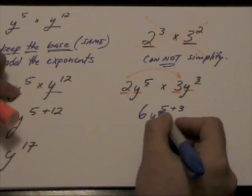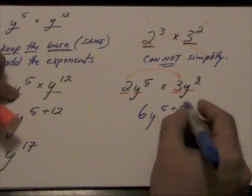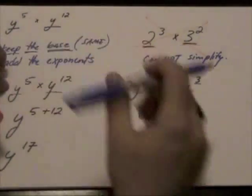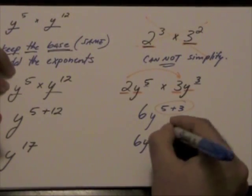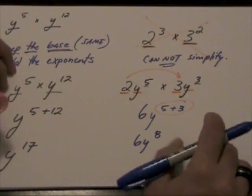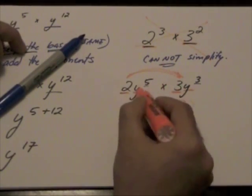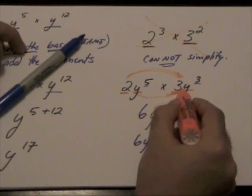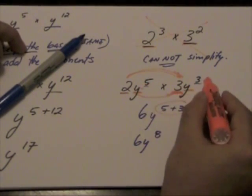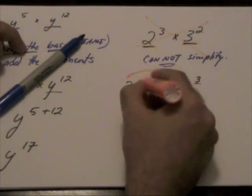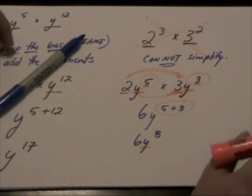My answer would be 6y to the power of 5 plus 3, which when we add these values together gives 6y to the power of 8. Notice we multiply our numbers. We multiply these two powers, y to the 5 and y to the 3. We keep the base which is y and add our exponents.